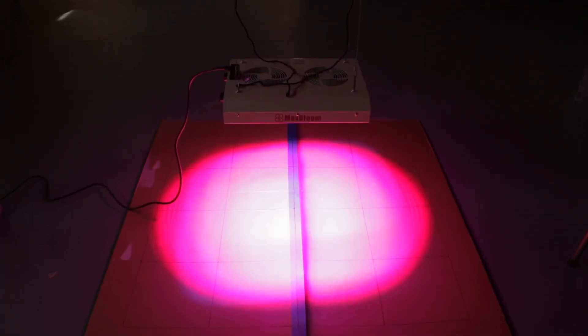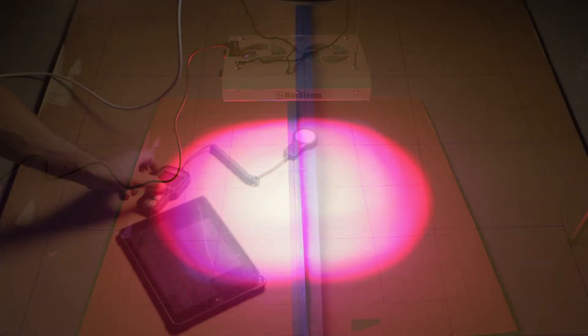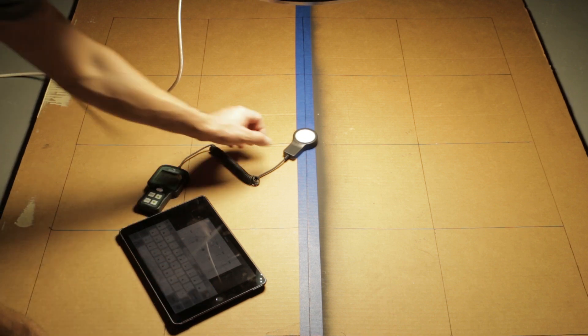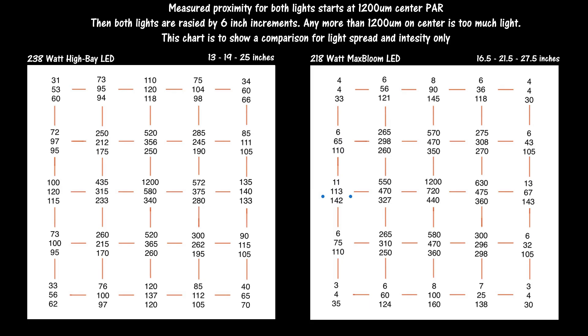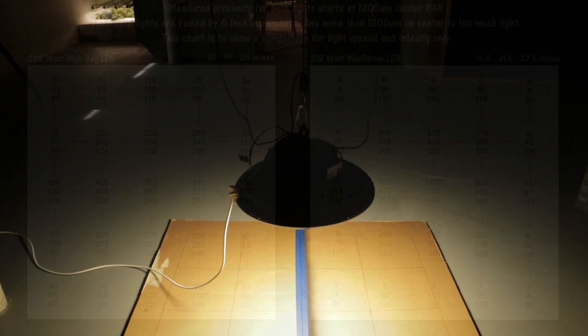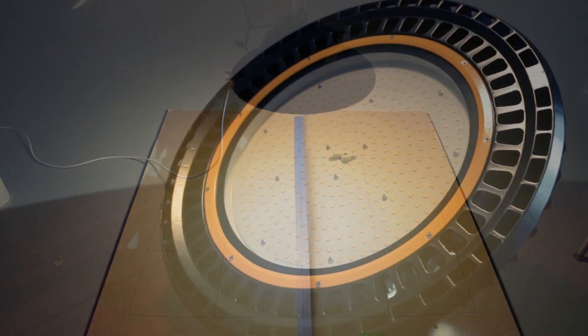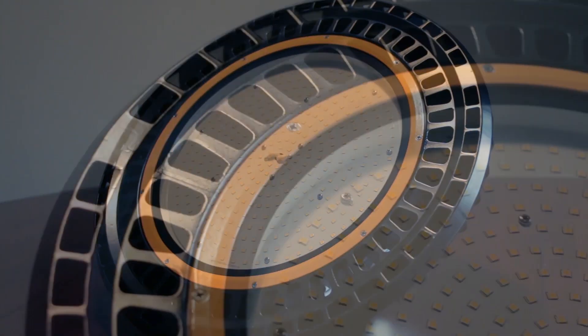I also took a PAR footprint of this light using a 3x3 grid. I did this at 3 different heights at max output shown in these diagrams and also compared it to a white LED high bay light which consumes around 238 watts. If you are interested in the high bay light you can click the link in the description for the review I did on that light as well.